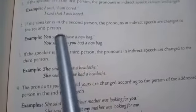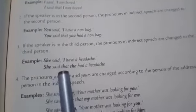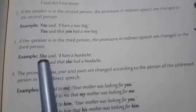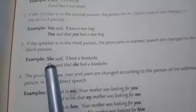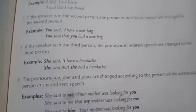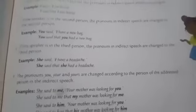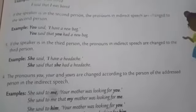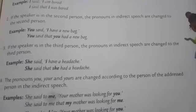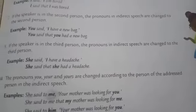If the speaker is in the third person, the pronouns in indirect speech are changed to the third person. We have covered first person and second person; now for third person — if the speaker before the reporting verb is a third person pronoun (he/she), the reported speech pronouns also remain in third person. She said, 'I have a headache.' She said that she had a headache.